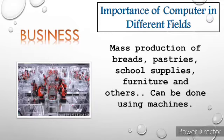Number 3: Industry. Most production of bread, pastries, school supplies, furniture, and cosmetics, among others, can be done with the use of machines. Promotions and marketing strategies will be easier to execute because of the different options on the internet.